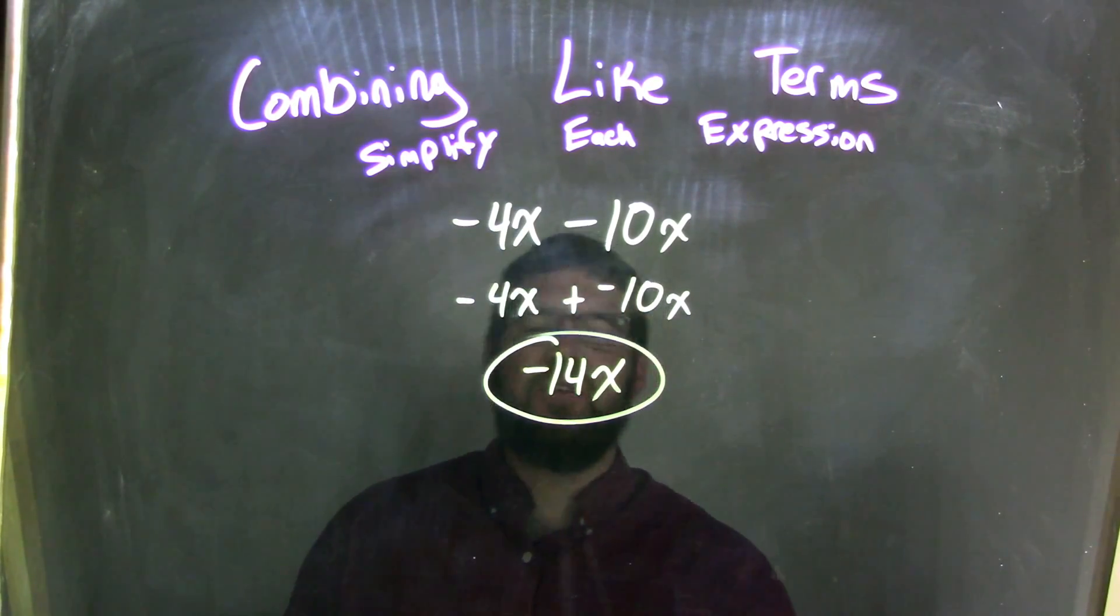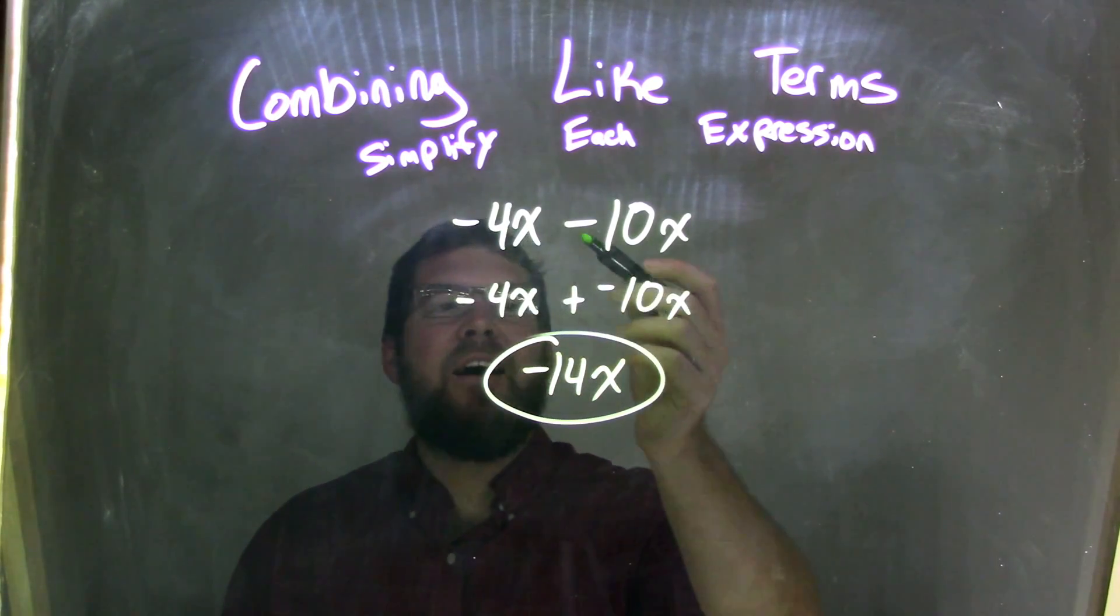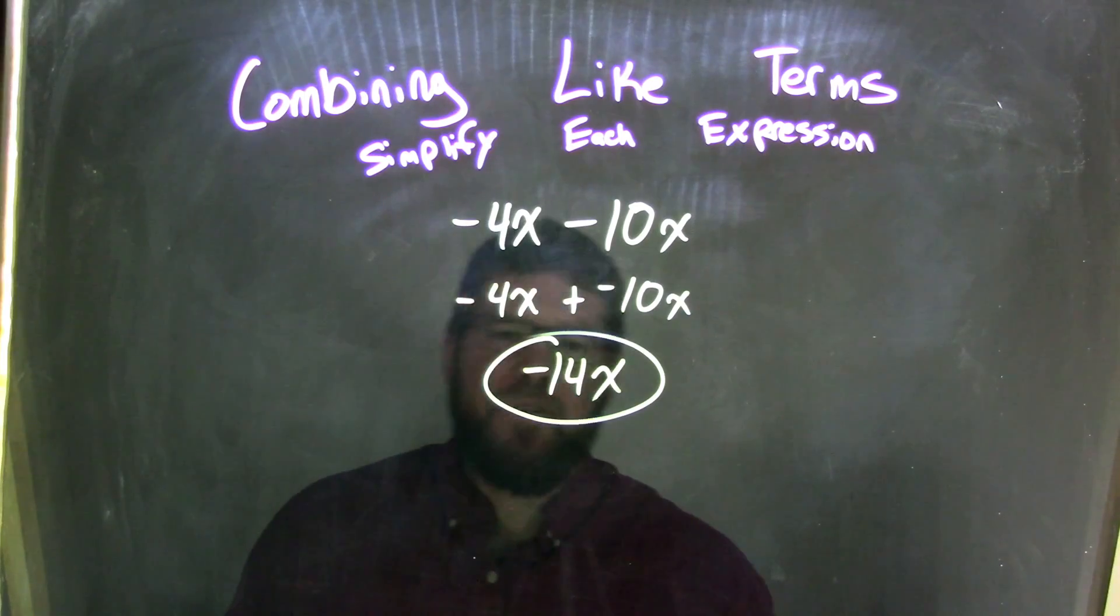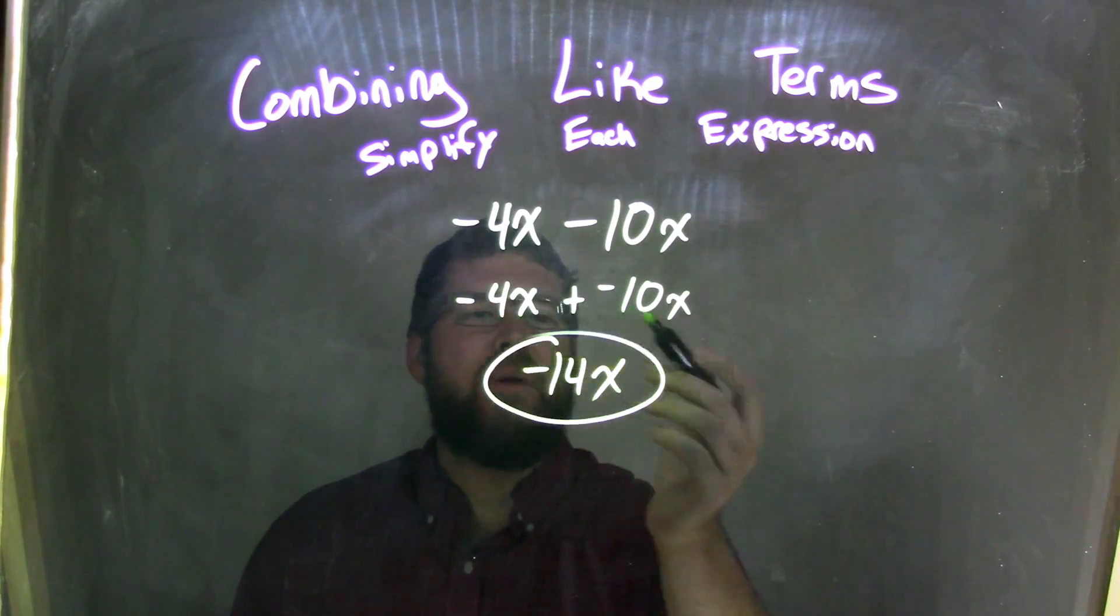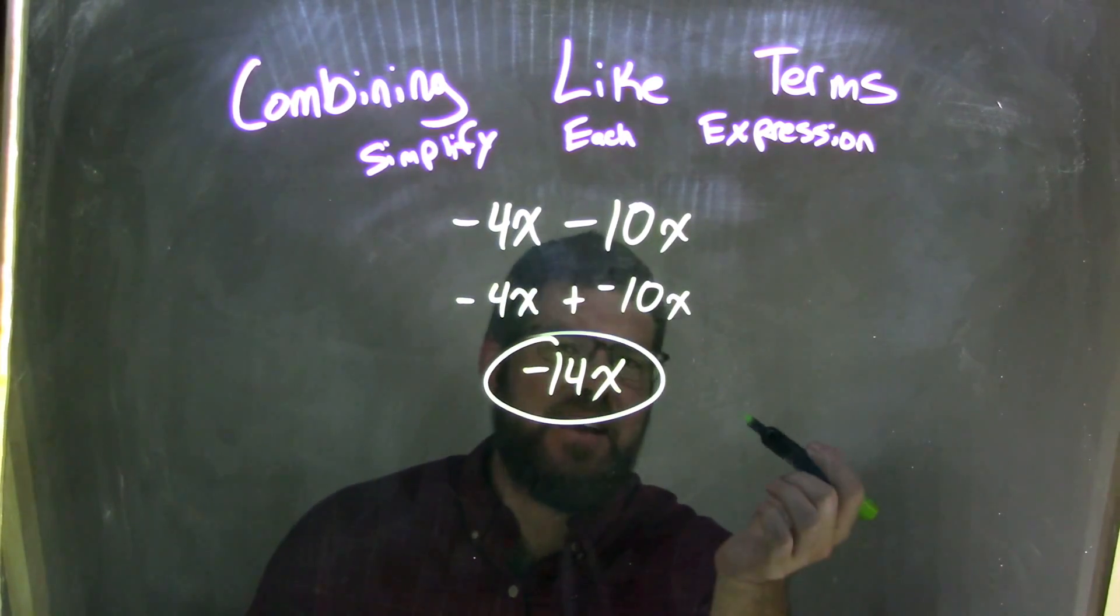So again, let's recap. We started with negative 4x minus 10x. I rewrote that to be, instead of minus 10x, adding a negative 10x. That made it easier for me personally to see that negative 4x plus negative 10x. I could add that easier.